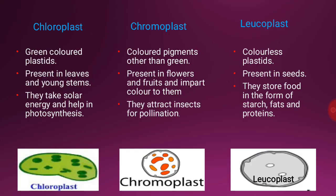Chloroplast: these are green-colored plastids which contain chlorophyll. They are mainly present in leaves and young stems. Their function is to trap solar energy and help in photosynthesis. That is why they are also called the kitchen of the cell.